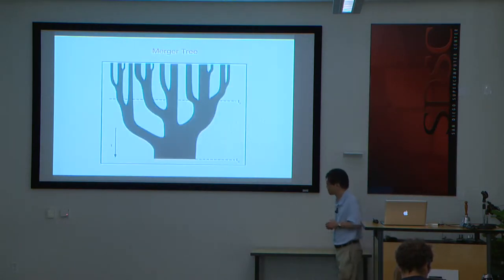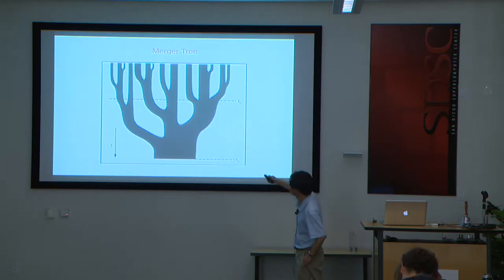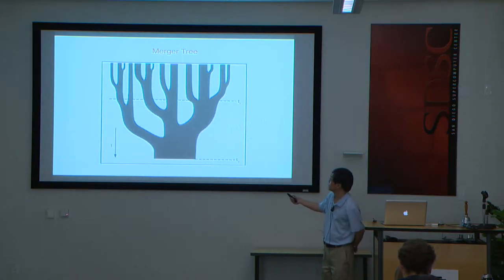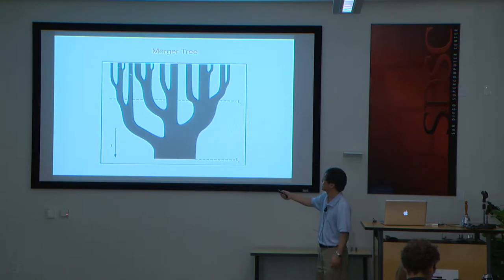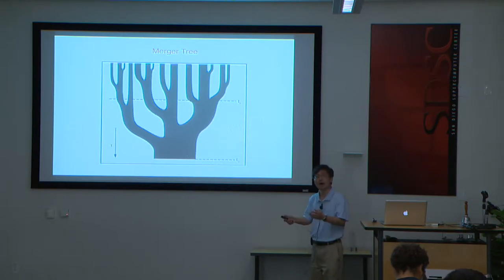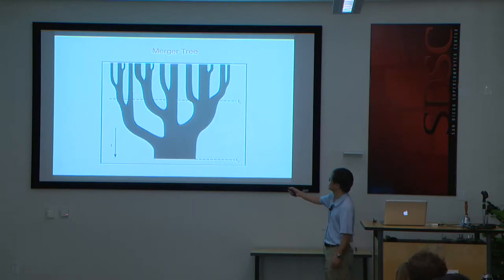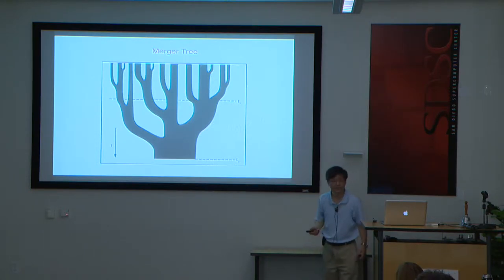A pictorial way to think about this is the merger tree. At early times, at the top of the figure, you have very small collapsed halos. As time goes on, these smaller halos attract each other by gravity, combine into larger halos, and eventually larger and larger things merge together. At the end of the simulation, focusing on one region, you get a big halo — this is how the Milky Way was formed. Today the Milky Way's dark matter mass is about 10^12 solar masses.